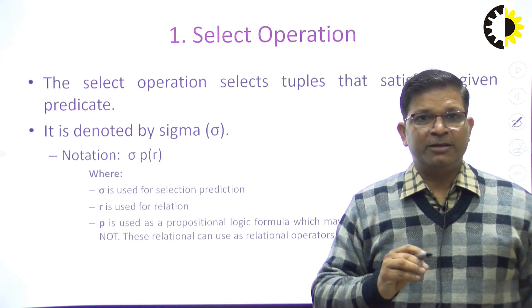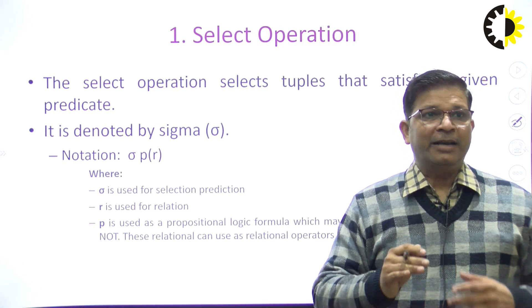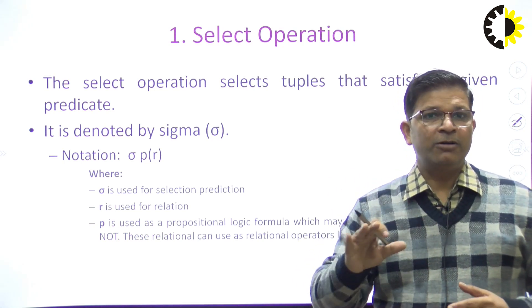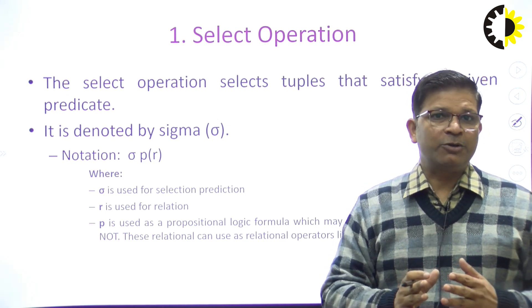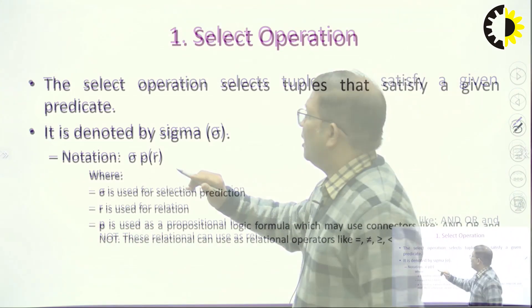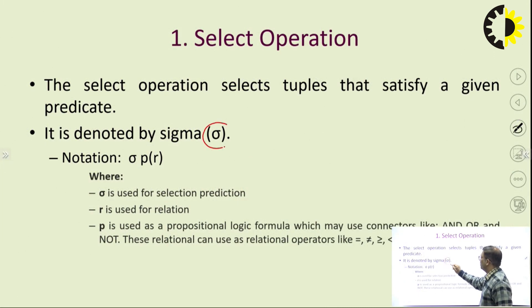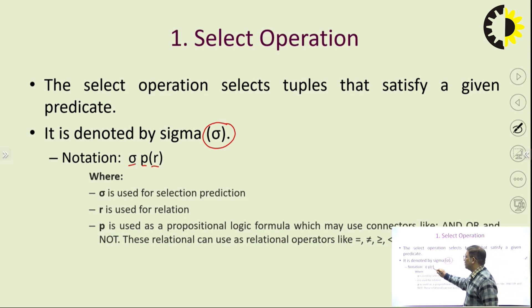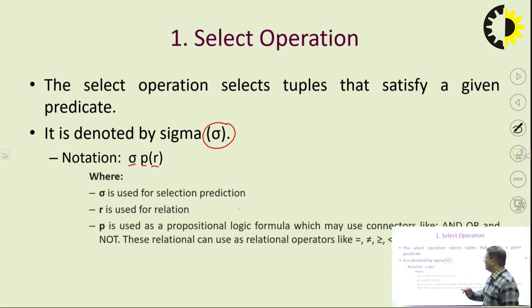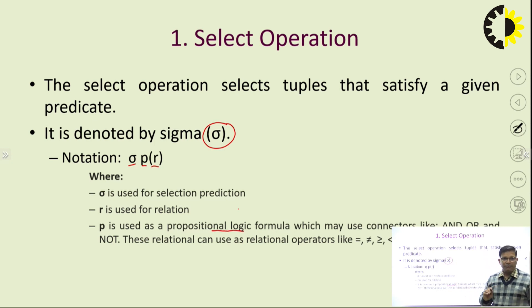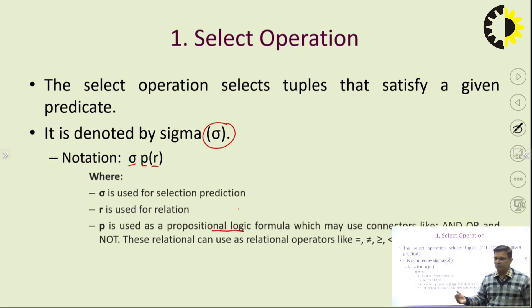The select operation identifies or extracts related tuples — the related records from a given database, also called the relation. The symbol for select operation is sigma, and the notation is σ_p(r), where r is the relation (a database table) and p is the predicate or propositional logic formula, which may use connectives like AND, OR, NOT, and other clauses. This is the basic operation of a select query.